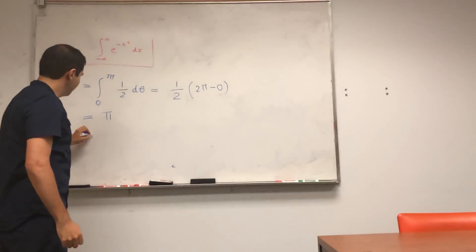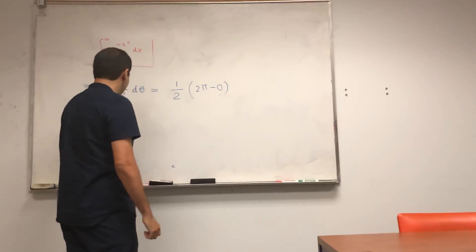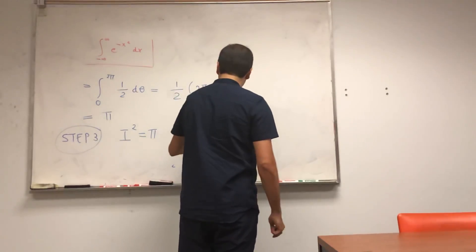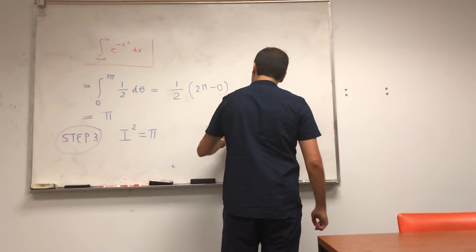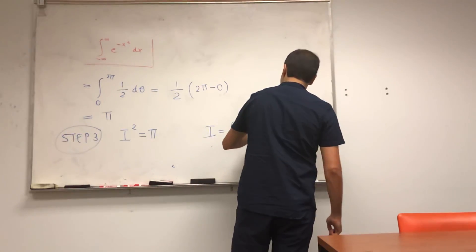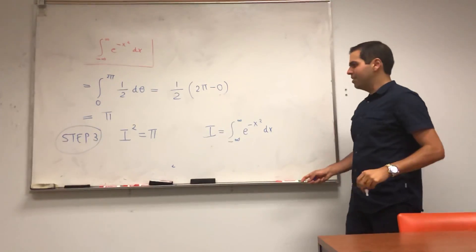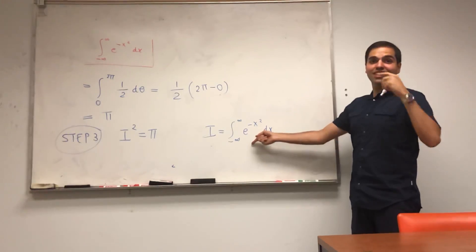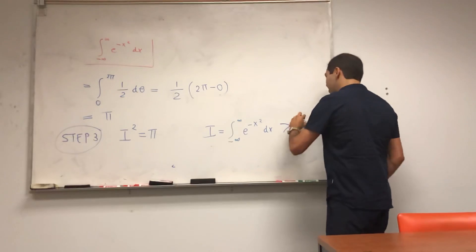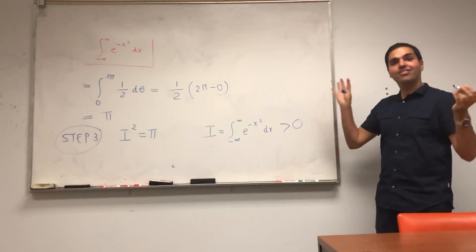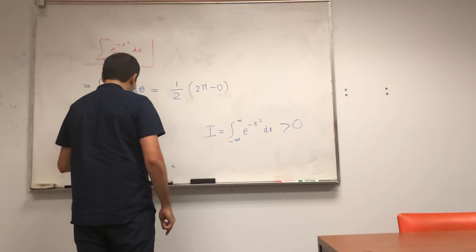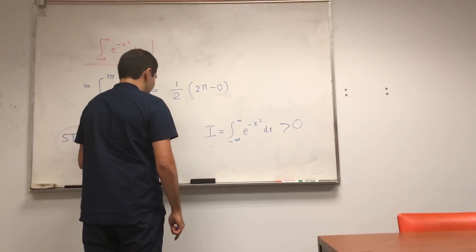What we found is that I² = π, where again I was the integral from -∞ to ∞ of e^(-x²)dx. And now notice, question is: is it √π or -√π? But this function is positive, so the integral has to be positive. And therefore I just becomes √π.